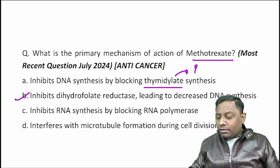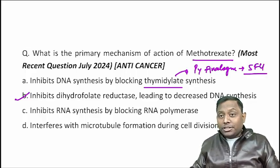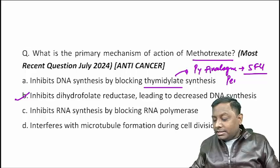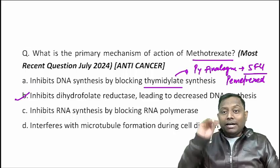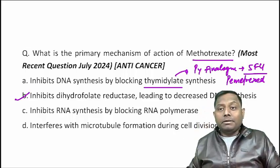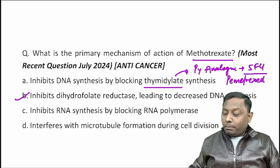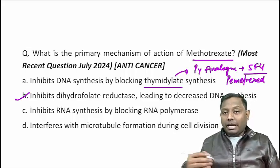Thymidylate is one of the pyrimidines. Blocking thymidylate synthase corresponds to a pyrimidine analog — a fake pyrimidine — which is 5-fluorouracil. 5-Fluorouracil is the thymidylate synthase inhibitor. It is also the drug associated with hand-and-foot syndrome (painful palmar-plantar erythema). So pyrimidine analog 5-FU inhibits thymidylate synthase.